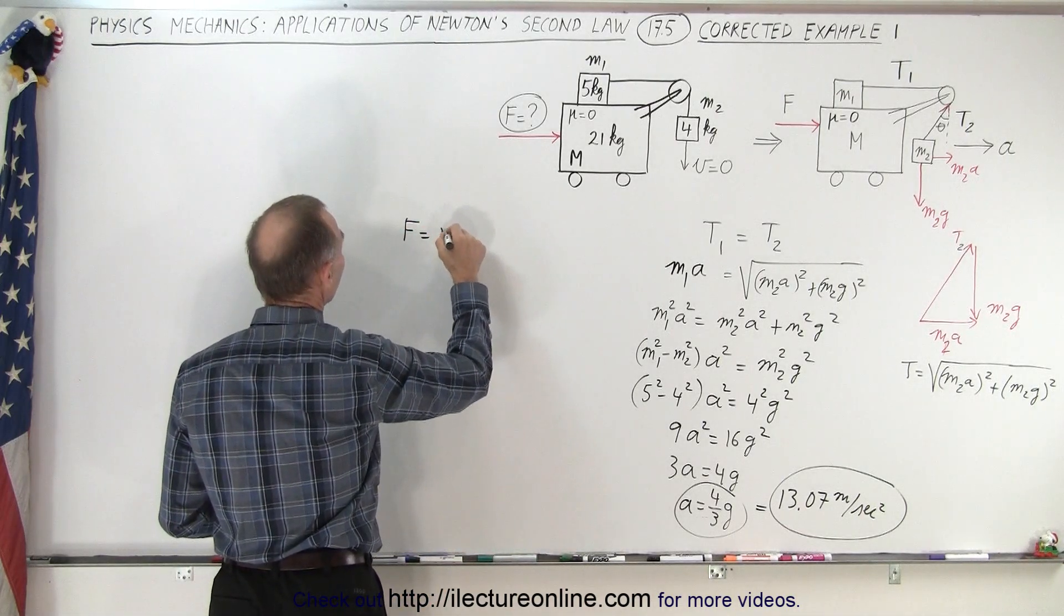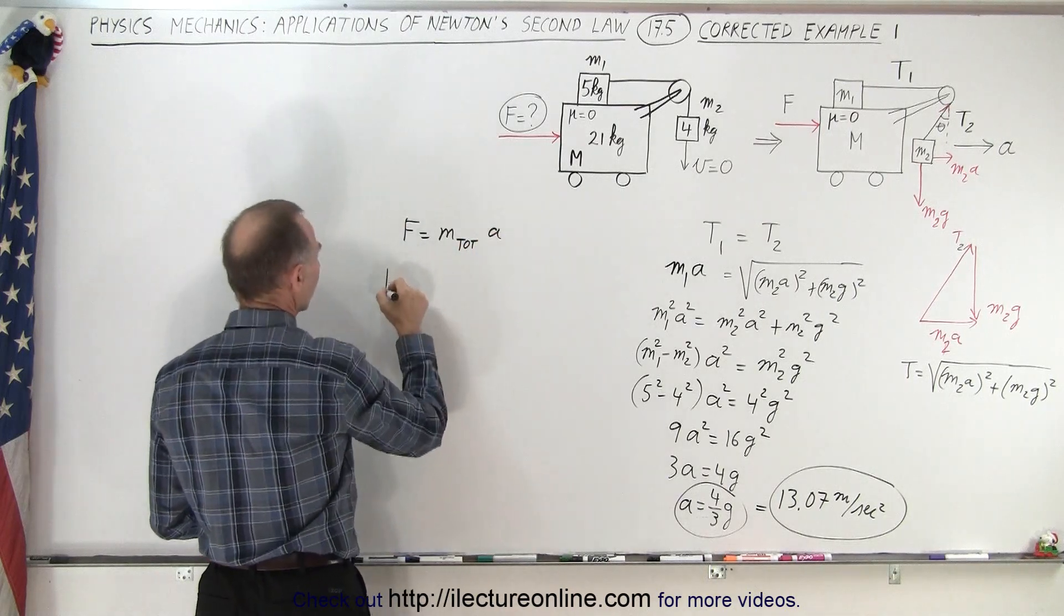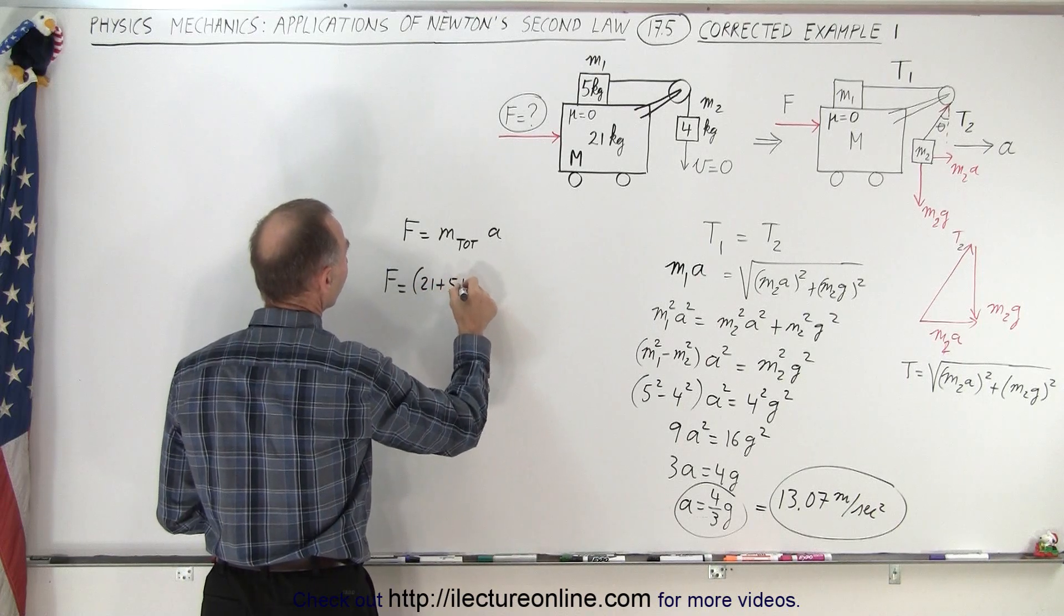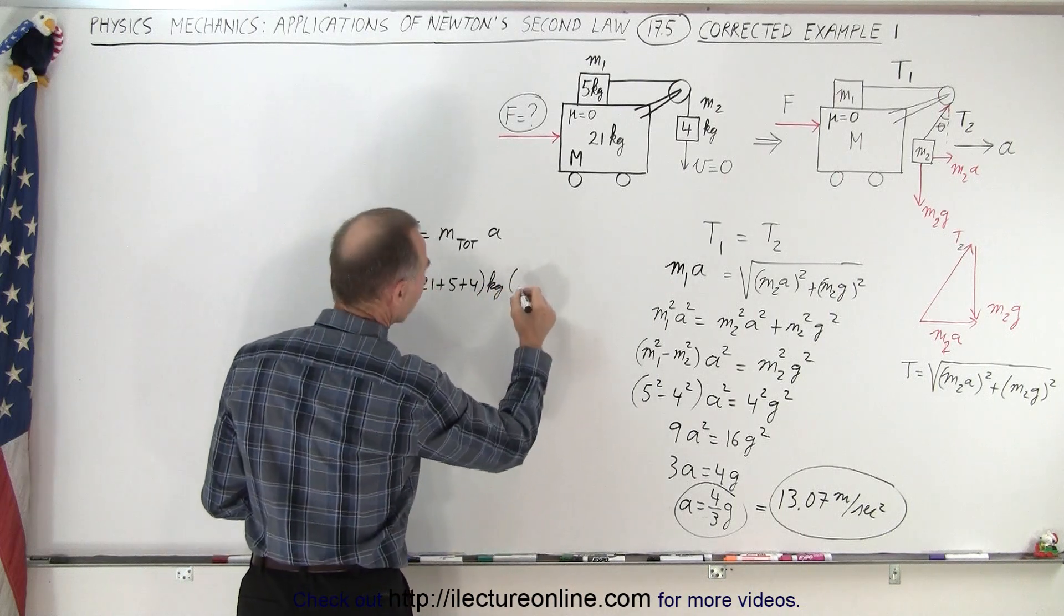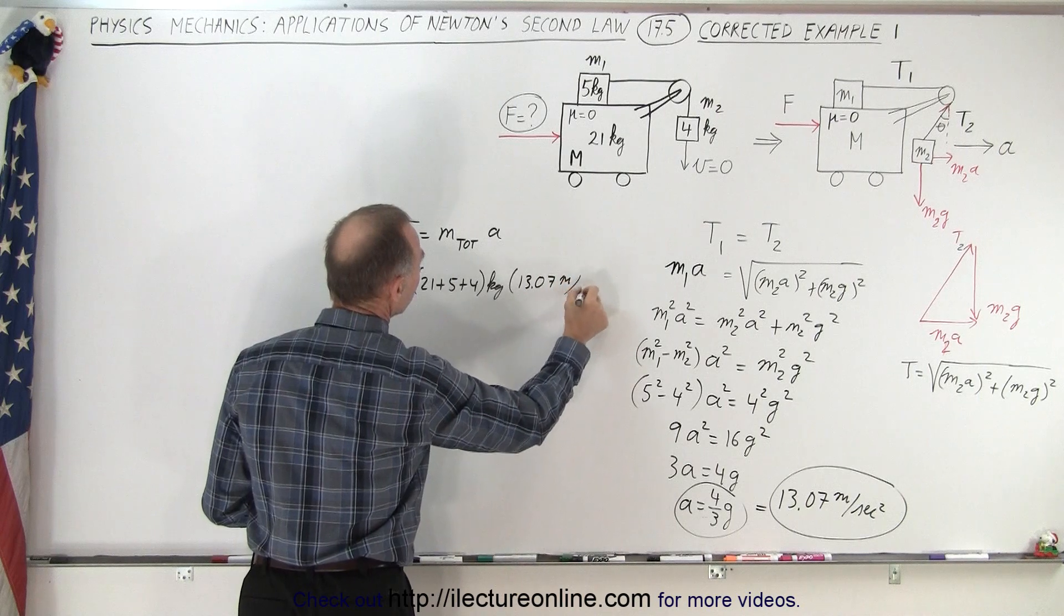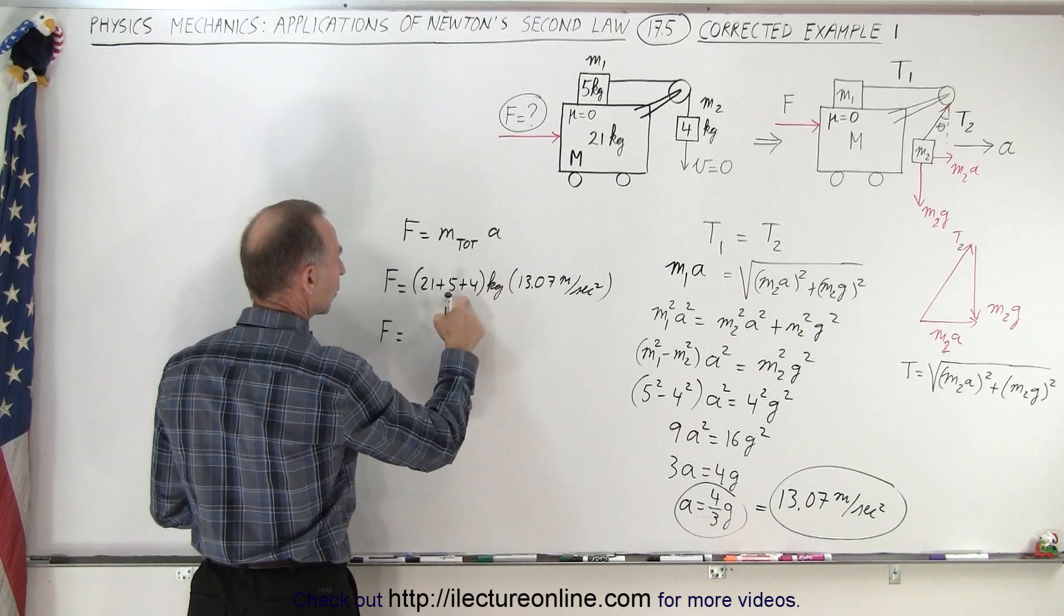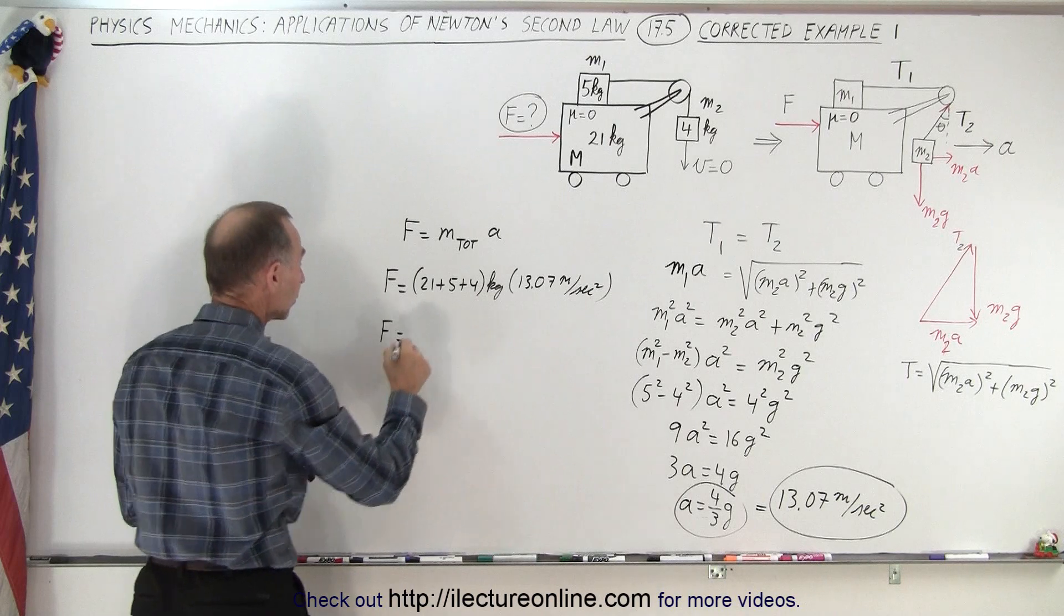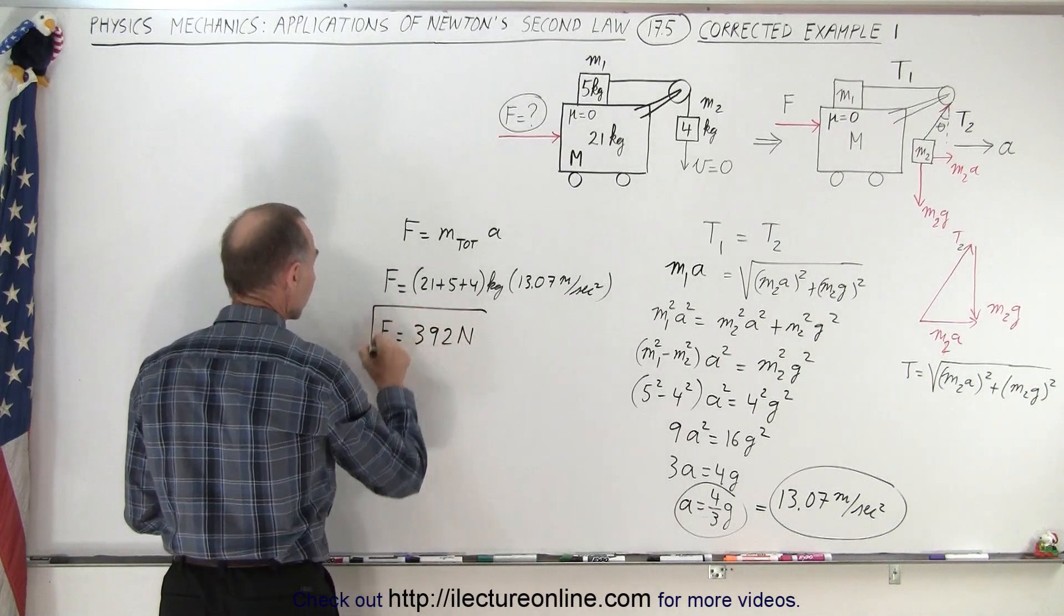And then finally, to get the force, we know that f is equal to the mass total of the whole system, times acceleration. So f is equal to the total mass, which is 21 plus 5 plus 4 kilograms, multiplied times 13.07 meters per second squared. So the force required would be 30 times that, and that would be equal to 392 newtons.